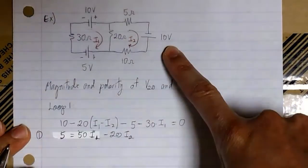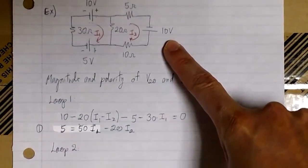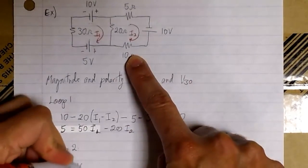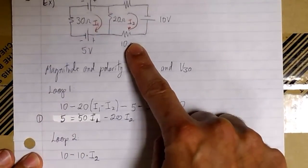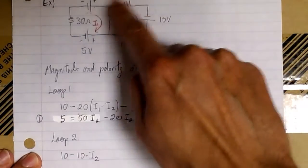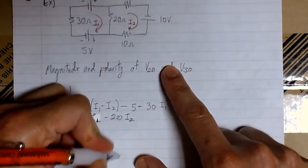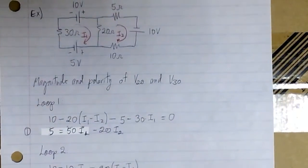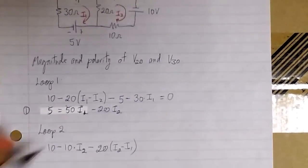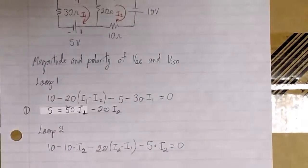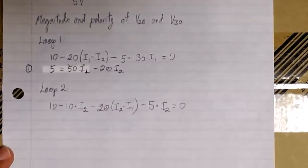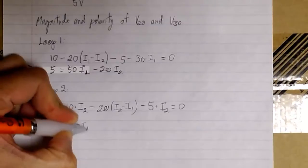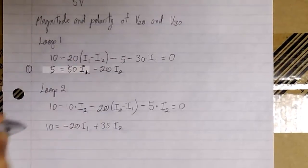We can rewrite this equation and call it equation 1. Now we do exactly the same thing with loop 2. We start at the source: we have 10 volts, then we subtract the drop across the 10 ohm resistor, which is 10 times I2, minus the drop across 20, where the current through 20 is I2 minus I1 since we're working on loop 2. Finally, we subtract the drop across 5, which is 5 times I2, and the summation equals zero. Rewriting gives us equation 2: 10 equals minus 20 I1 plus 35 I2.